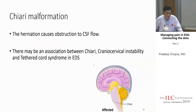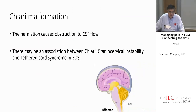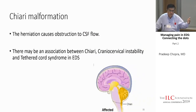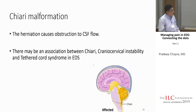Herniation of the brain causes obstruction to CSF flow and increased pressure. Studies show about 66% of patients with Chiari malformation also have tethered cord syndrome simultaneously. It's also associated with craniocervical instability. Neurosurgeons treating this in EDS will do a decompression along with a fusion.